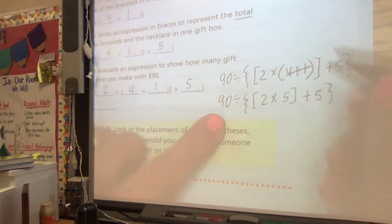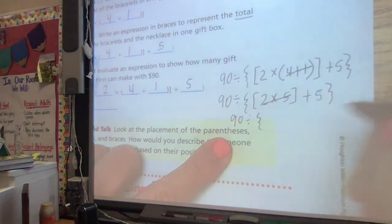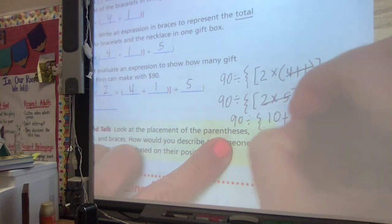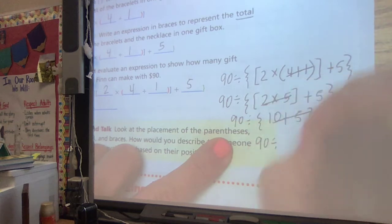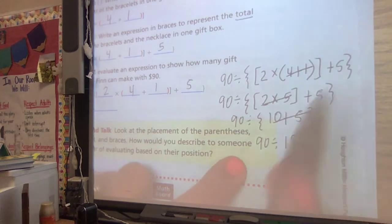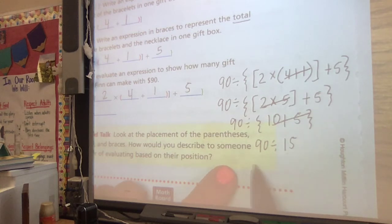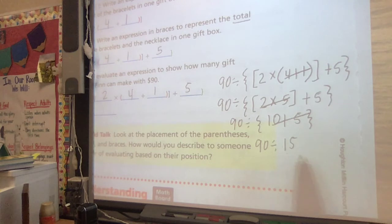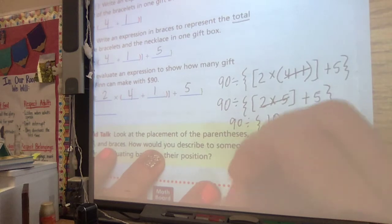Next, I'm going to solve this. 90, 2 times 5 is 10 plus 5. 90 is still on the outside. I know 10 plus 5 is 15. And so now I'm left with 90 divided by 15. It's costing me $15 to make one gift box. So if I take 90, how much money he has, and I divide it into 15, that's going to tell me how many I can make. It's like how many $15 are in 90.